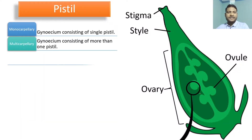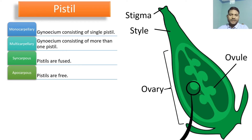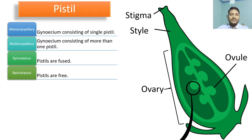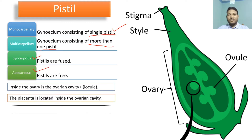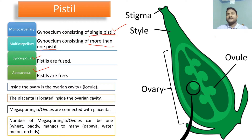Coming to the female reproductive structure, the pistil consists of the stigma, style, and ovary. Pistils are also known as carpels. When the gynoecium has a single pistil, it is called monocarpillary; if more than one, it is multicarpillary. If multiple pistils are fused together, it is called a syncarpous condition, and if they are free, it is called an apocarpous condition.